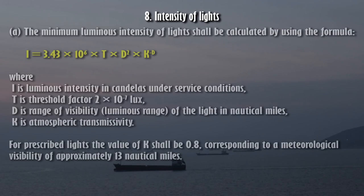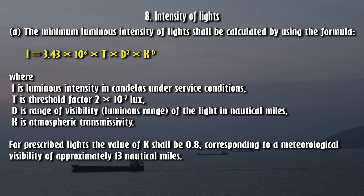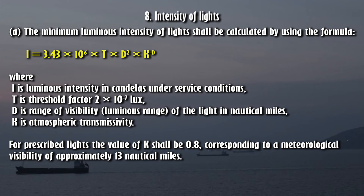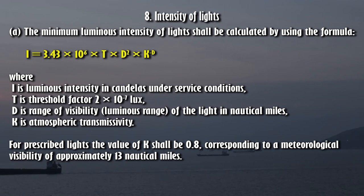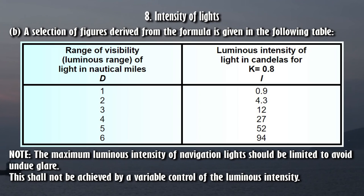Section 8 — Intensity of Lights. (A) The minimum luminous intensity of lights shall be calculated by using the formula: I = 3.43 × 10⁶ × T × D² × K^(−D), where I is luminous intensity in candelas under service conditions; T is threshold factor 2 × 10⁻⁷ lux; D is the range of visibility (luminous range of the light in nautical miles); and K is atmospheric transmissivity. For prescribed lights, the value of K shall be 0.8, corresponding to a meteorological visibility of approximately 13 nautical miles.